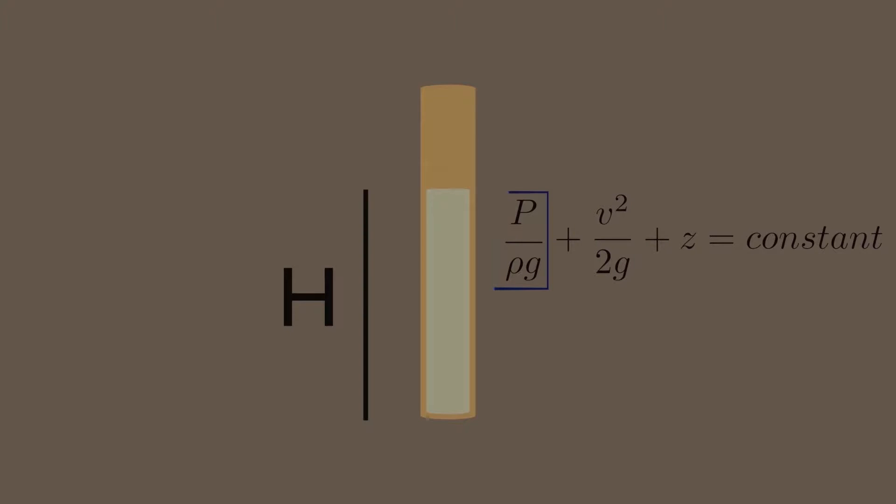First one is the pressure head. It represents the height of a fluid column that produces the static pressure. Let us visualize this pressure head in a more practical way.